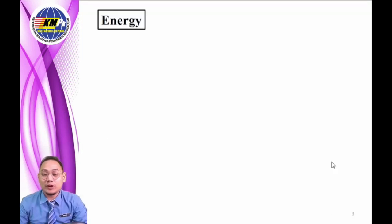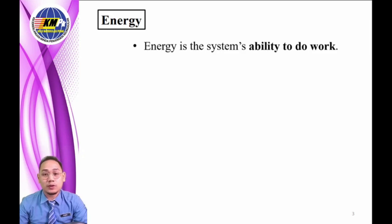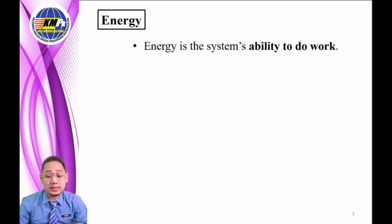Energy — I'm pretty sure we have heard that term before. But how do we define it? In terms of physics, energy is a system's ability to do work. This energy system is defined as all components that are related to the production, conversion, delivery, and use of energy in a system. But in general, we just need to relate energy with the ability to do work.